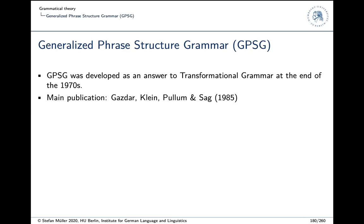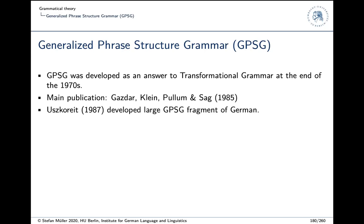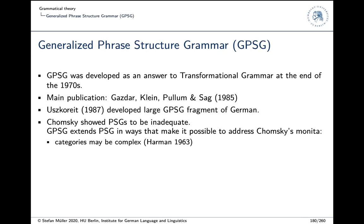The main publication is also essentially the final publication, but the main innovations of this framework survived and were transferred into other frameworks. The basis for this session is a book by Hans Uszkoreit published in 1987, which grew out of his 1985 dissertation. He developed a larger fragment of German in the framework of GPSG, and we will discuss his suggestions and what follows.